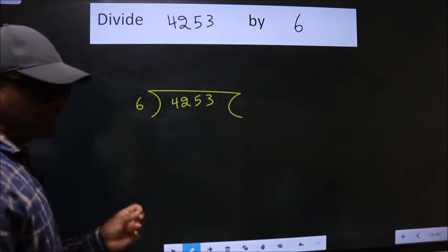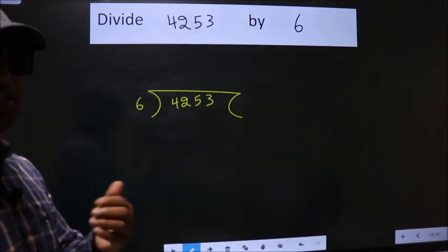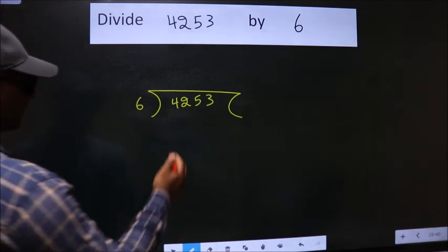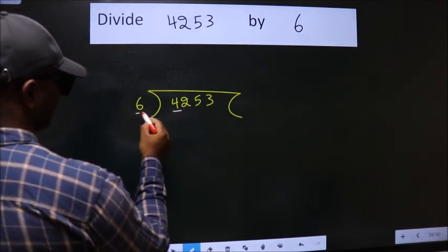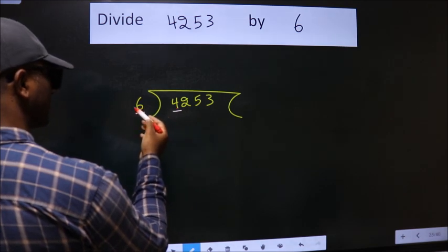This is your step 1. Next, here we have 4. Here 6. 4 is smaller than 6.